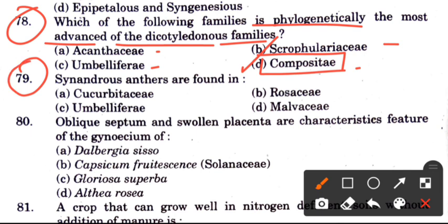Question: Synandrous anthers are found in — options are Cucurbitaceae, Rosaceae, Umbelliferae, and Malvaceae. Synandrous anthers are found in family Cucurbitaceae. The answer is A.